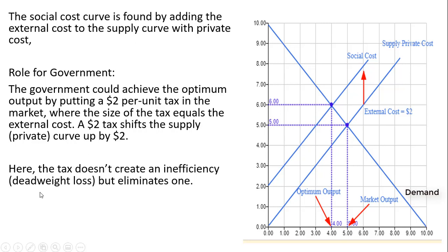Here, the tax doesn't create an inefficiency or deadweight loss — it actually eliminates one. A $2 per unit tax, equal to the size of the external cost, brings about an equilibrium where the price is $6 and the quantity is at its optimal level of 4 units.